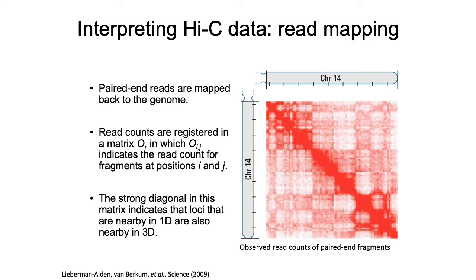Essentially this table represents a matrix of counts O, where O_ij represents the number of reads for which one end mapped to locus i and one end mapped to locus j. The diagonal of this heatmap or O matrix basically tells you about the local interactions — which are likely in large part non-specific — between adjacent loci in the genome.